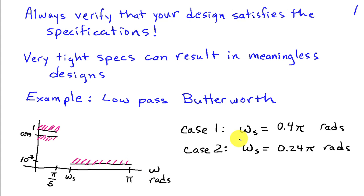We'll consider two cases where stopband edge begins at 0.4π radians. So there's a 0.2π transition band and then another case where the stopband edge is at 0.24π radians. In other words, the transition band is 0.04π. So it's fairly narrow. We're going to look at some Butterworth designs for this particular problem.